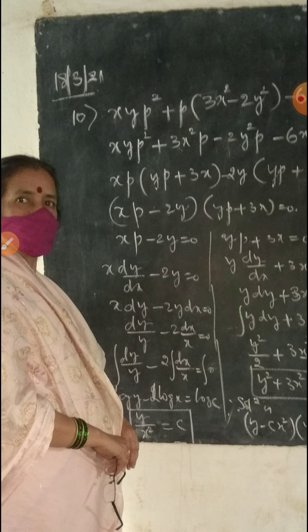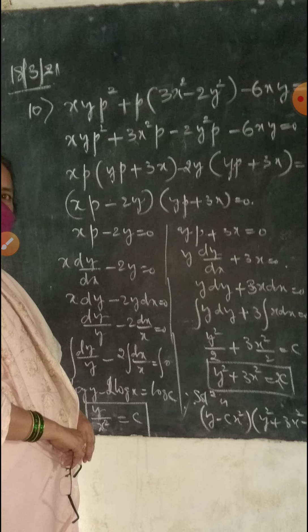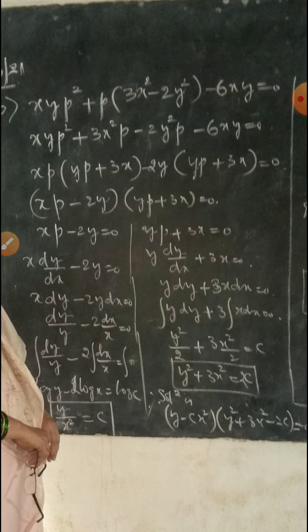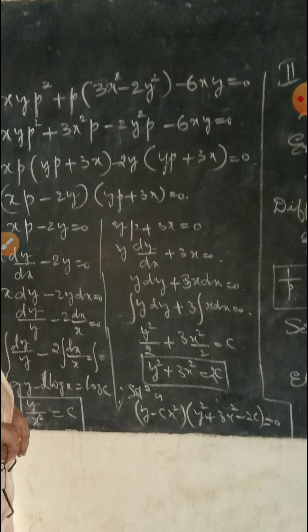So log Y - 2 log X = log C, giving Y/X² = C. Now solving the other equation, YP + 3X = 0: Y·dY/dX + 3X = 0, so Y·dY + 3X·dX = 0. Integrating: Y²/2 + 3X²/2 = C, therefore Y² + 3X² = 2C.